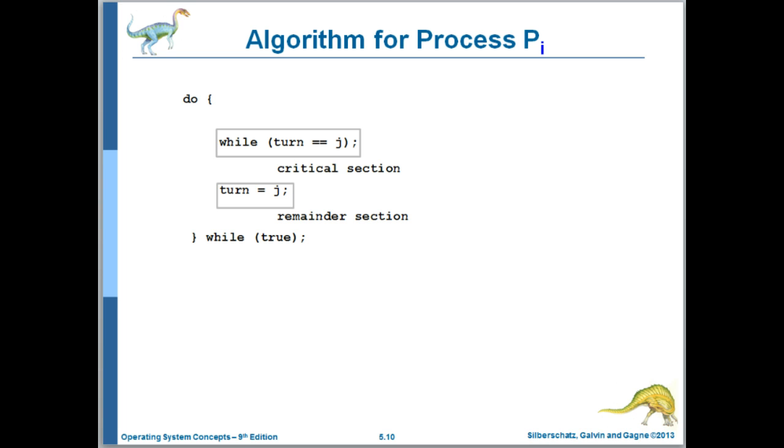You can imagine the code for PJ when PJ exits its critical section. It sets the turn to I, at which point process I, that condition there would go false for I, and I would begin executing its critical section. The problem we have here is that this solution requires strict alternation of the processes.